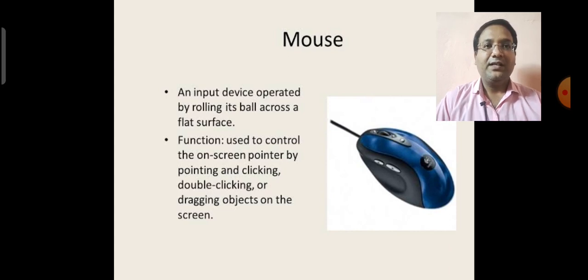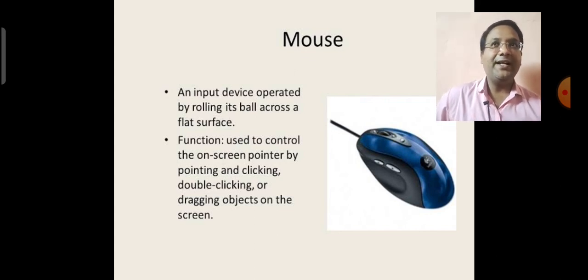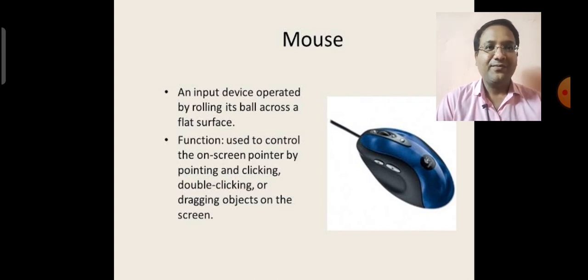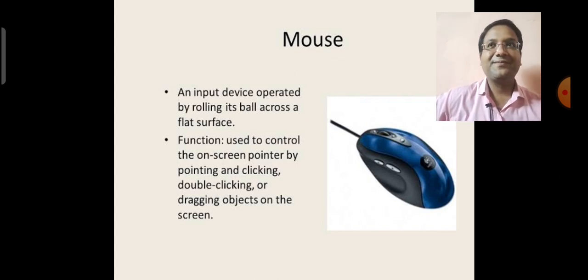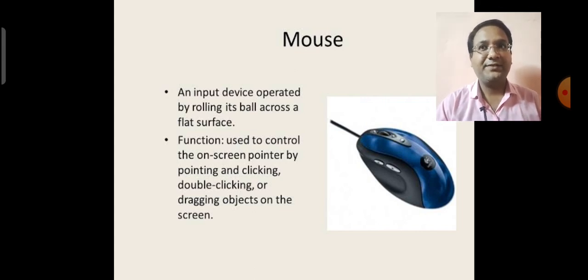Next is mouse. Mouse is a pointing device and an input device operated by rolling its ball across a flat surface. What is the functions of the mouse? We use computer mouse to select and move an object on a computer screen. Use to control the on-screen pointer by pointing and clicking, double clicking or dragging objects on the screen. It is a pointing device and used to move the cursor from one point to another point. Mouse wire connected with the CPU. It has two or three buttons on it. We use it for selecting any object.